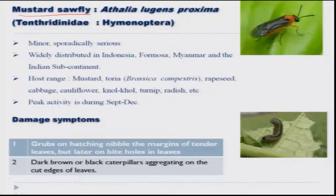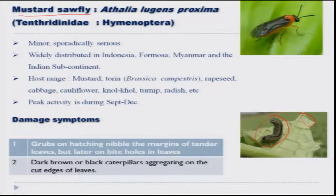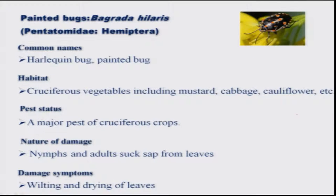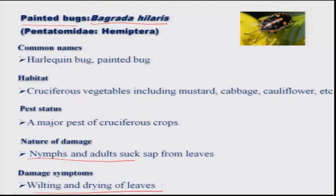The mustard sawfly is occasionally seen on cabbage and belongs to the Hymenopteran group. The young ones look like caterpillars and feed from the leaf margin, leading to defoliation. The painted bug, Bagrada cruciferarum or Bagrada hilaris, is another sucking pest, widely distributed but quite serious in certain parts of the country. Both nymphs and adults suck from the leaves, resulting in wilting and drying up of the leaves.